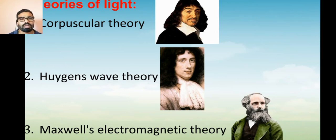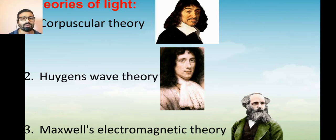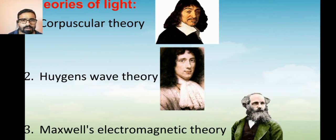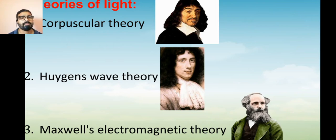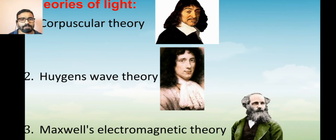The first theory is the corpuscular theory, the second theory is Huygens' wave theory, and the third one is Maxwell's electromagnetic theory. For the corpuscular theory, you can see a photo of Descartes, who actually gave the corpuscular theory.